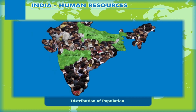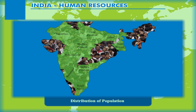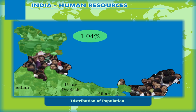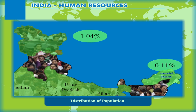Uttar Pradesh, Maharashtra, Bihar, West Bengal, Andhra Pradesh along with Tamil Nadu, Madhya Pradesh, Rajasthan, Karnataka and Gujarat together account for about 76% of the total population of the country. On the other hand, the share of population is very small in states like Jammu and Kashmir (1.04%), Arunachal Pradesh (0.11%) and Uttarakhand (0.84%), in spite of these states having fairly large geographical area.